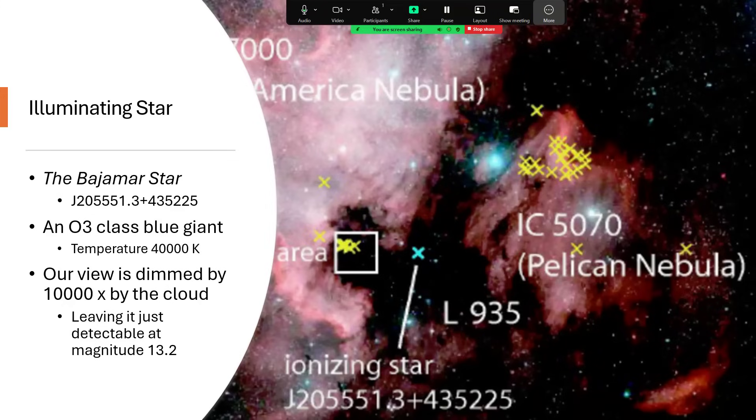The survey was able to discover this star which is J205551.3 plus 435225, or the Bajamar star as it's much more easy to say, and is located roughly where the Bahamas would be if that was North America on a map. It's right slap bang behind the center of the thick part of the dust cloud, the cloud called L935.